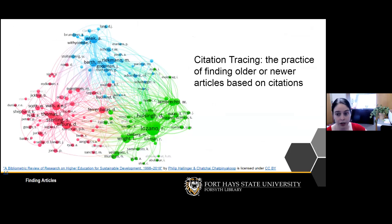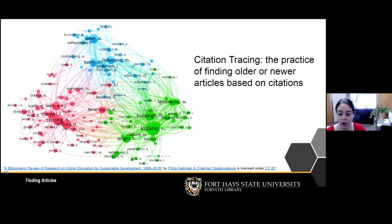A strategy I particularly want to highlight for finding literature review resources is citation tracing. In the library we talk about scholarship as a conversation — authors publish articles not in a vacuum, but in response to and building on previous literature. Citation tracing lets you follow that scholarly conversation, which can really help inform the structure of your literature review.